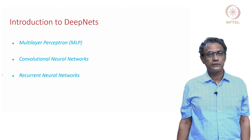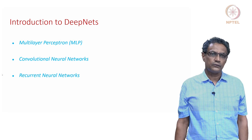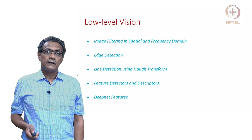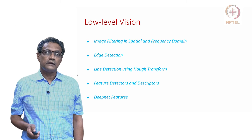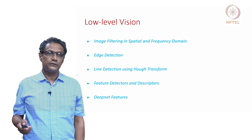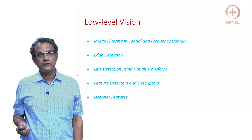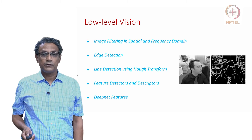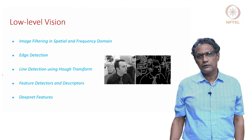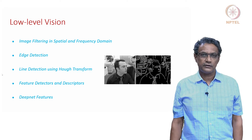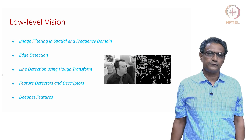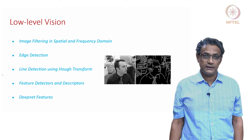Then we will go to a convolutional neural network, then recurrent neural networks. Within low-level vision, we will cover image filtering both in the spatial and the Fourier domain. Then we would be interested in edge detection and line detection, because lines can convey a lot of information about the geometry of a scene.